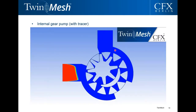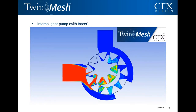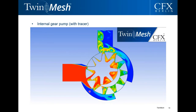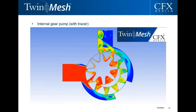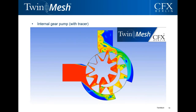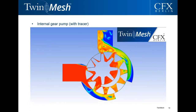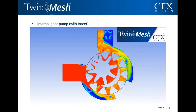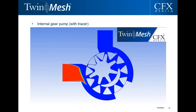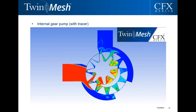Here we see an internal gear pump — similar to the previous example but without multi-phase. The flow patterns are visualized with a passive scalar or tracer added to the equations, giving a clear impression of the flow field inside the pump. This is insight that would be difficult to obtain experimentally, and it can accelerate optimization compared to building a physical prototype for each design modification.